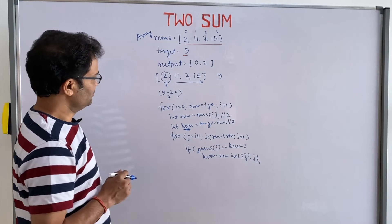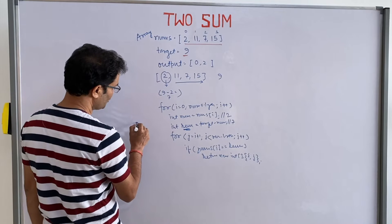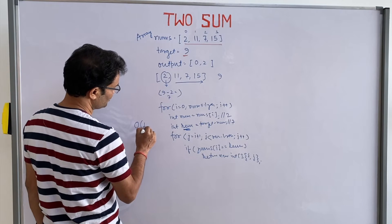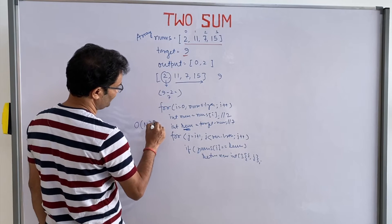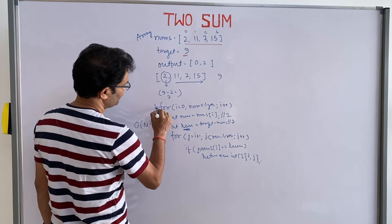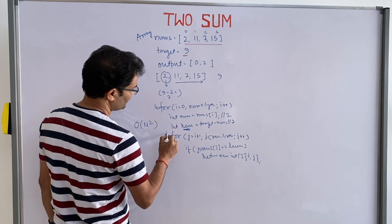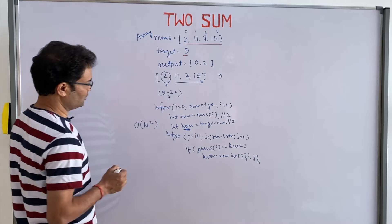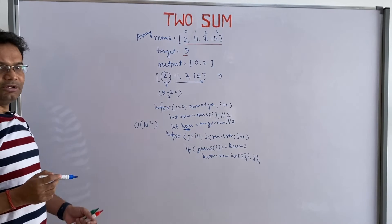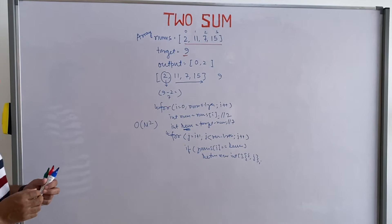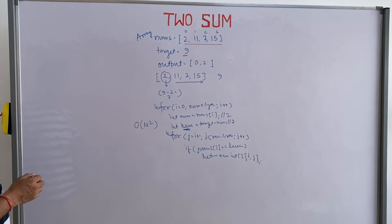This is the easiest way to solve this problem, but if you see here, your complexity is O(n²) because you have one for loop and inside it another for loop. Let me discuss a better approach than this.